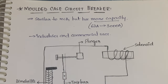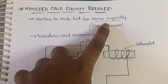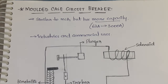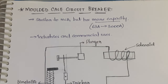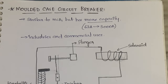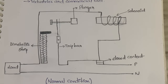MCCB is similar to MCB but has more capacity — it can handle a greater amount of current. The current used in our houses is not the same as the amount used in an industry, shopping mall, or for commercial purposes. In those cases we use MCCB, where the usage of current is more. This is the diagram, and from this diagram I'll explain normal and abnormal conditions.